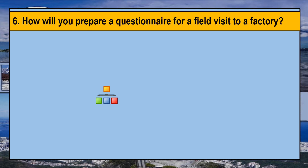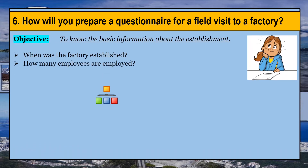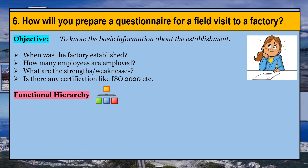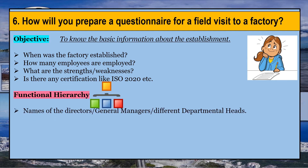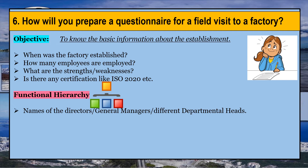We now move on to the sixth question: how will you prepare a questionnaire for a field visit to a factory? You need to take into consideration the purpose or objective of visiting the factory. For example, the objective may be to know basic information about the establishment — questions like: when was the factory established? How many employees are employed? What are the strengths and weaknesses? Is there any certification like ISO? You can also ask questions on functional hierarchy such as names of directors, general managers, different departmental heads, and the functioning of various departments.